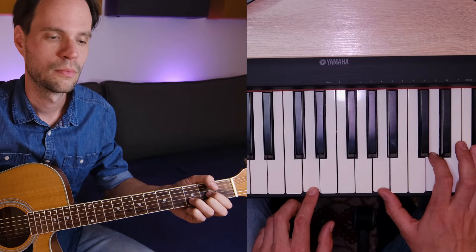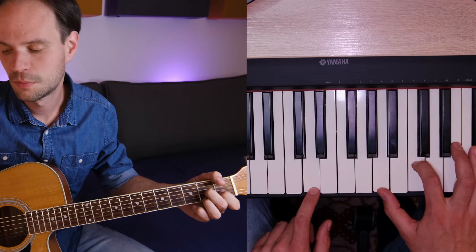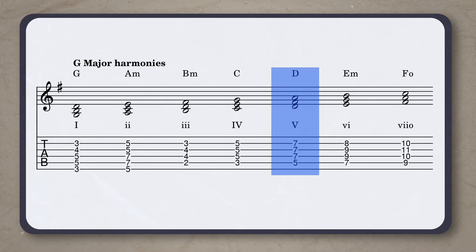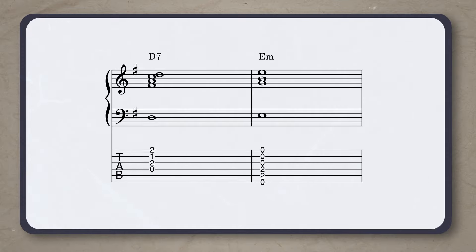The D turns into a D7 — this is now a dominant 7 chord. In tonal music it wants to resolve to the chord a perfect fifth below, which is the G. But instead we slide up to the E minor chord. This is called a deceptive cadence — you create expectation, but then you fool the listener by doing something else.